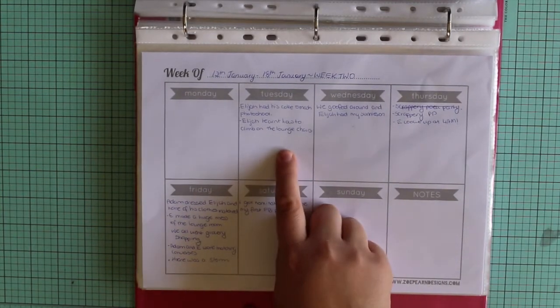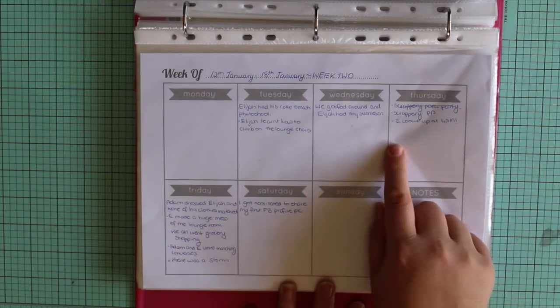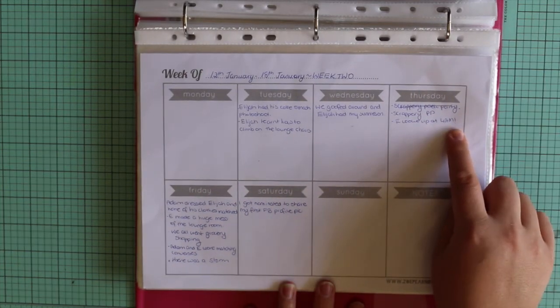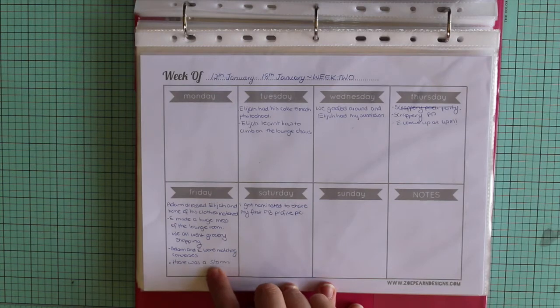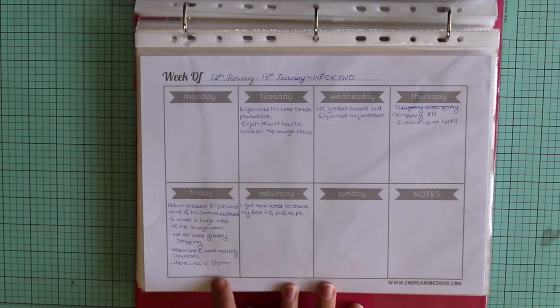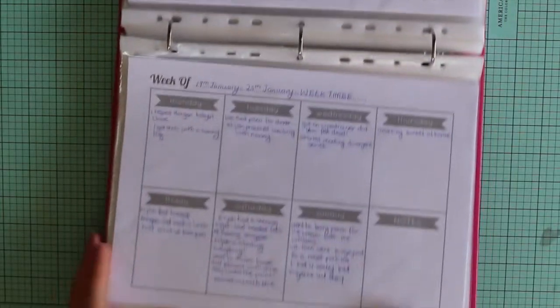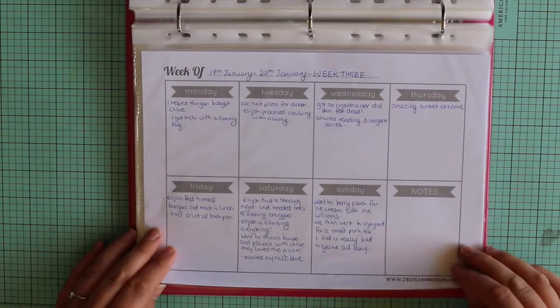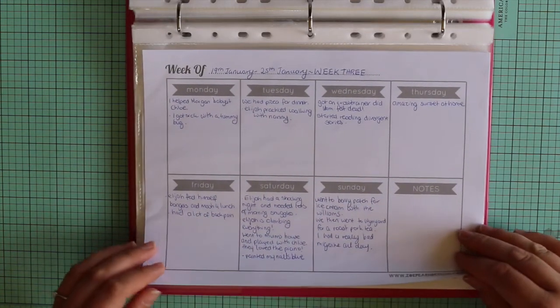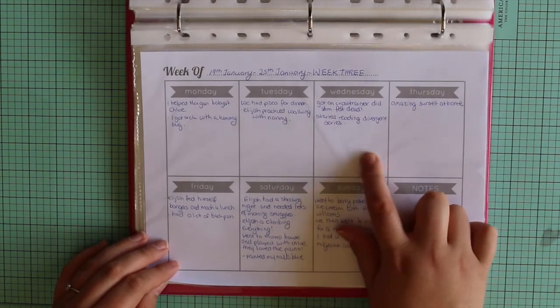And so I've written things down, like Elijah had his cake smash photo shoot. Elijah learned how to come up on the lounge. Elijah woke up at four o'clock in the morning. That was a horrible, horrible day. We went out grocery shopping, Adam and Elijah wore matching converse shoes for the first time. There was a big storm. If I keep this beside my computer of a night, I can just write down things from the day. We had pizza, Elijah practiced walking, got on the cross trainer, did one kilometer and felt like I was dying. I started reading the Divergent series.